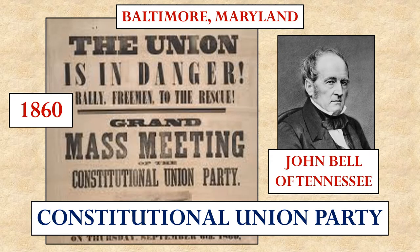Meanwhile, another political party formed. This was called the Constitutional Union Party. It tried to ally Whigs and southern Democrats who were not wanting to end slavery, but also wanted to oppose the idea of secession. They wanted to defend the Union without having to address the issue of slavery — just trying to hold the country together. They nominated a man named John Bell from Tennessee for president.